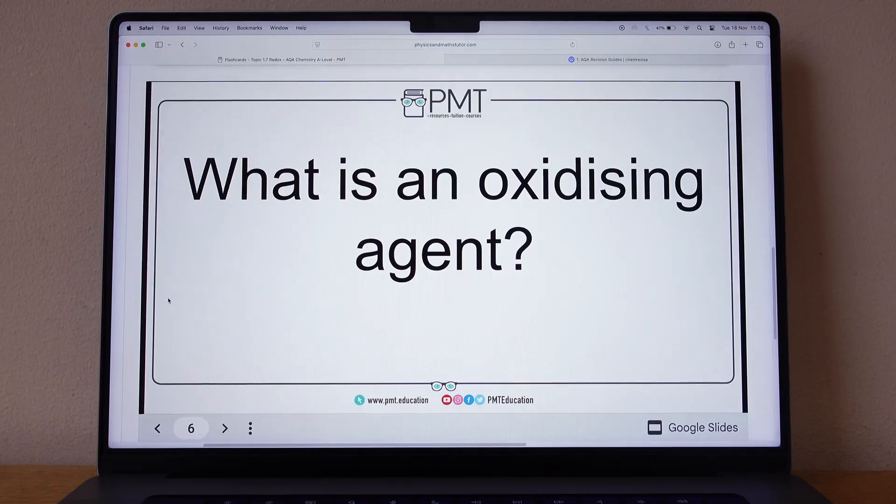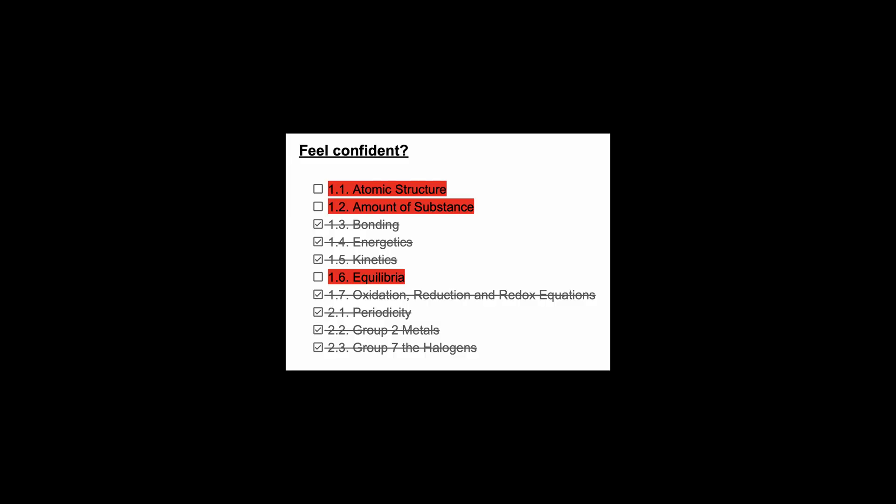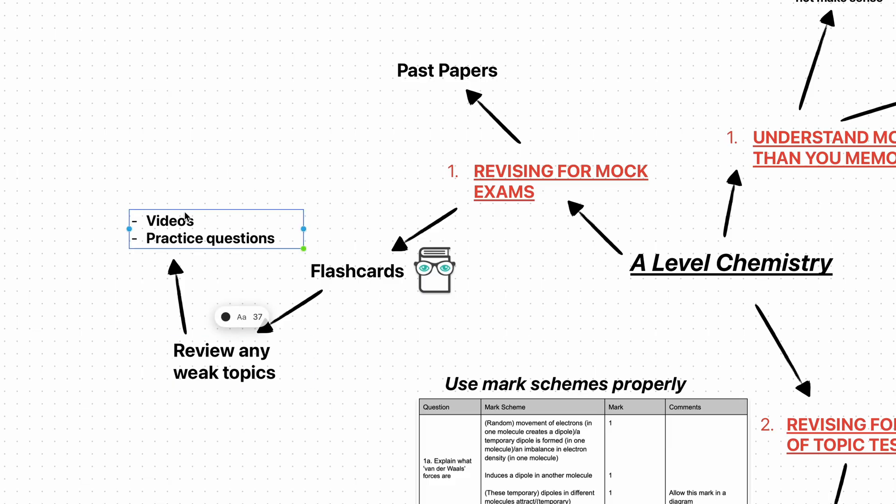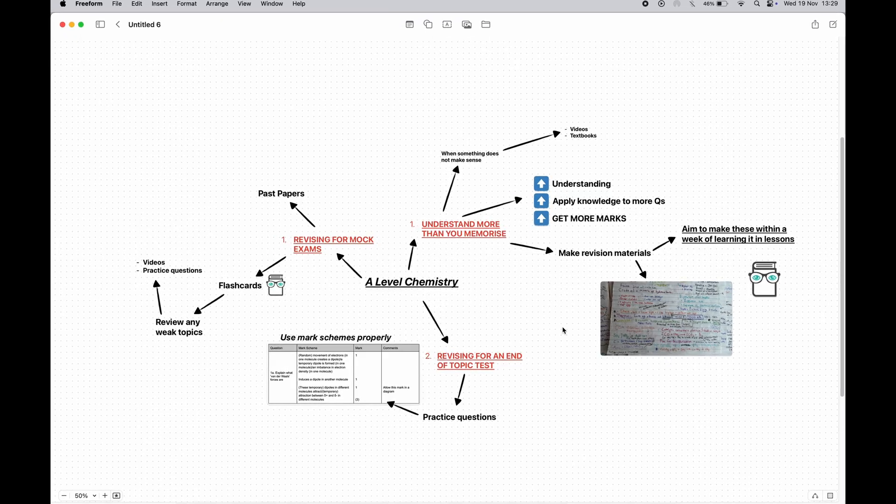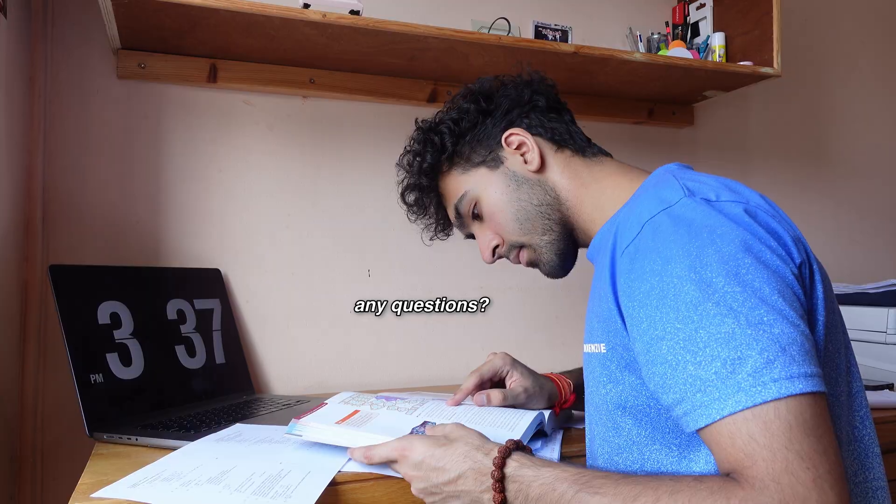If I found that I was weak on a particular set of flashcards, I would review that topic by using videos and then answer more exam questions. I'm going to move on to resources now, but that is how my study process was for chemistry. If you've got any questions on that, let me know.